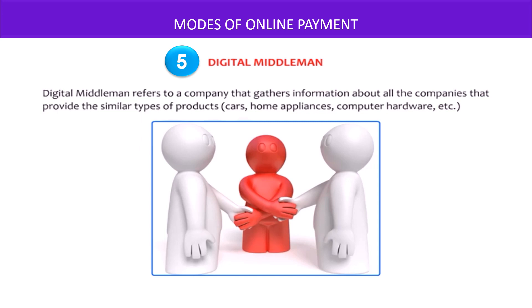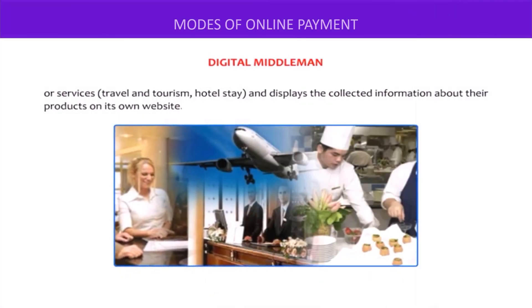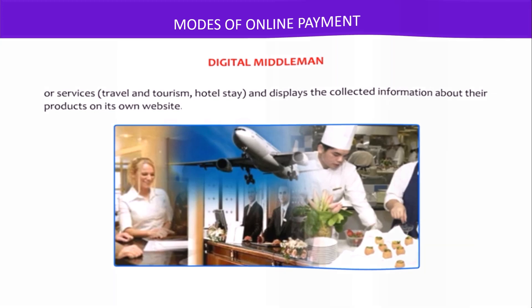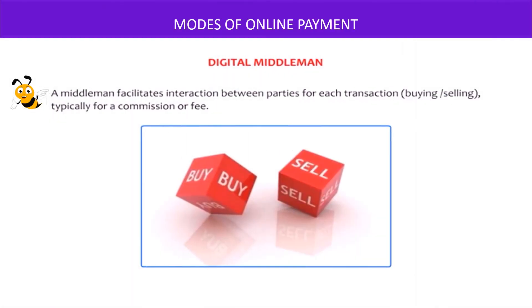Digital middleman. A digital middleman refers to a company that gathers information about all the companies that provide similar types of products, such as cars, home appliances, computer hardware, etc., or services such as travel and tourism, hotel stay, and displays the collected information about their products on its own website. A middleman facilitates interaction between parties for each transaction, whether it is buying or selling, typically for a commission or fee.